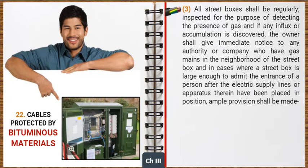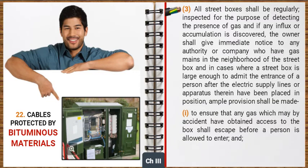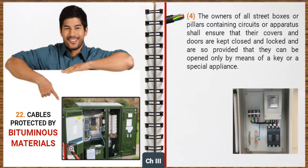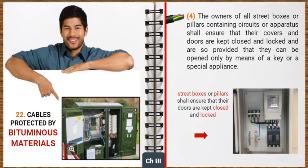Now let's understand the general safety requirements for street boxes. Street boxes shall not contain gas pipes, and precautions shall be taken to prevent as far as reasonably possible any influx of water or gas. Where electric supply lines forming part of different systems pass through the same street box, they shall be readily distinguishable from one another, and all electric supply lines of voltage exceeding 650 volts at or in street boxes shall be adequately supported and protected so as to prevent risk of damage to or danger from adjacent electric supply lines. All street boxes shall be regularly inspected for the presence of gas, and if any influx or accumulation is discovered, the owner shall give immediate notice to any authority or company who have gas mains in the neighbourhood. In cases where a street box is large enough to admit a person, after the electric supply lines or apparatus therein have been placed in position, ample provision shall be made to ensure that any gas which may accidentally have obtained access to the box shall escape before a person is allowed to enter. The owners of all street boxes or pillars containing circuits or apparatus shall ensure that their covers and doors are kept closed and locked, and are so provided that they can be opened only by means of a key or a special appliance.